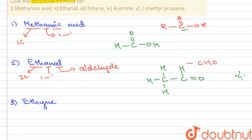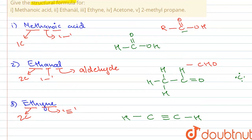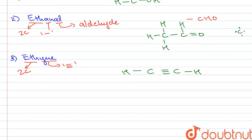Next we have ethine. The suffix 'ine' means it has a triple bond between the two carbon atoms. As the word root 'eth' suggests, it has two carbon atoms. The structure is two carbon atoms joined by a triple bond, and to complete the valencies we add one hydrogen atom on each side.